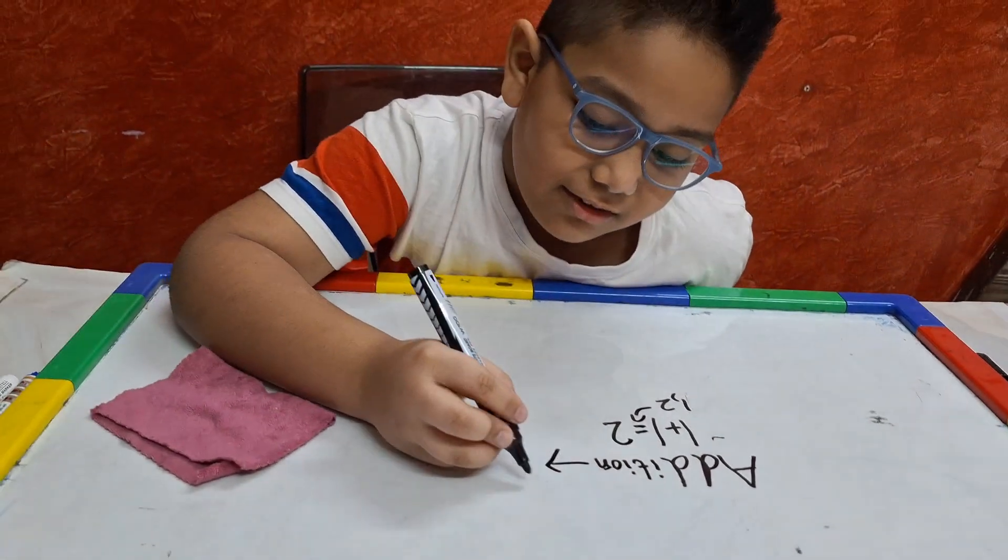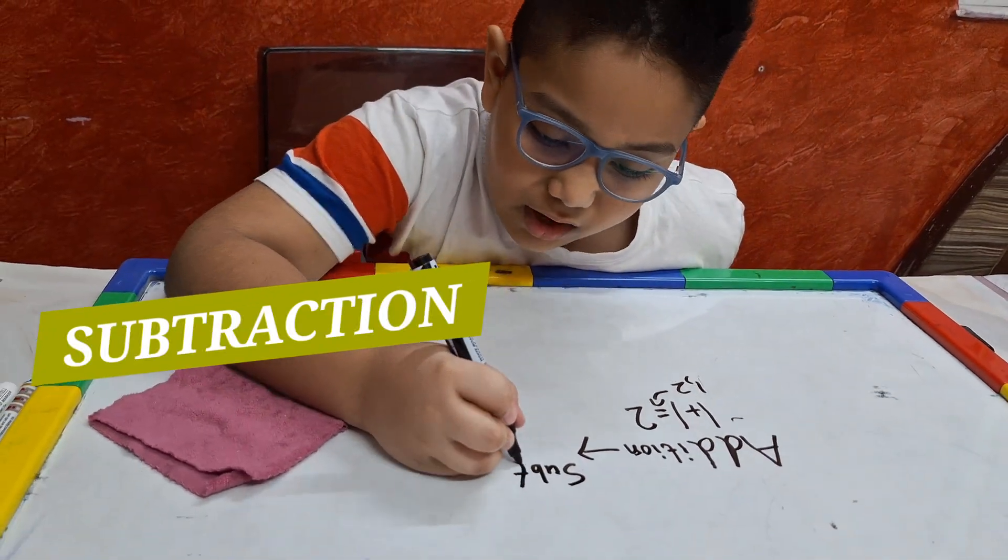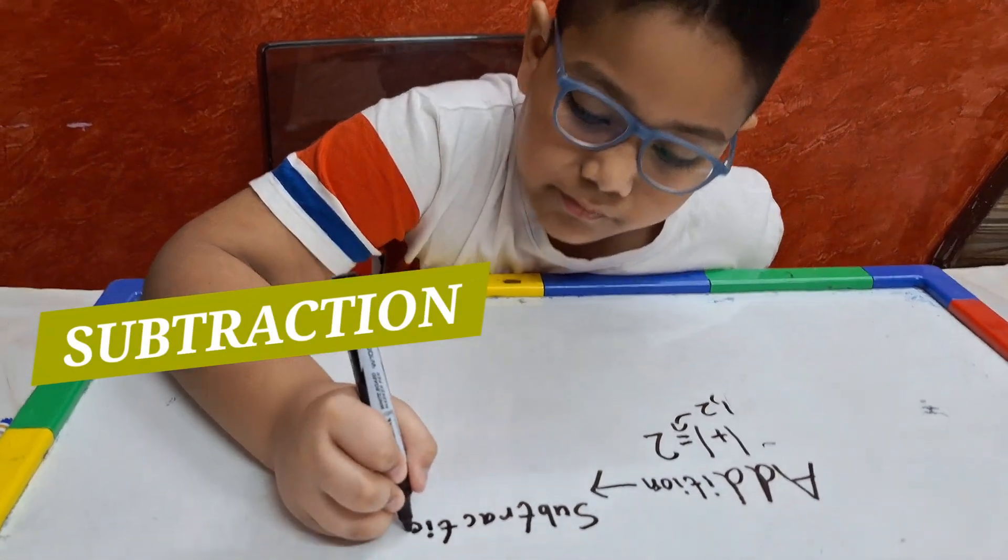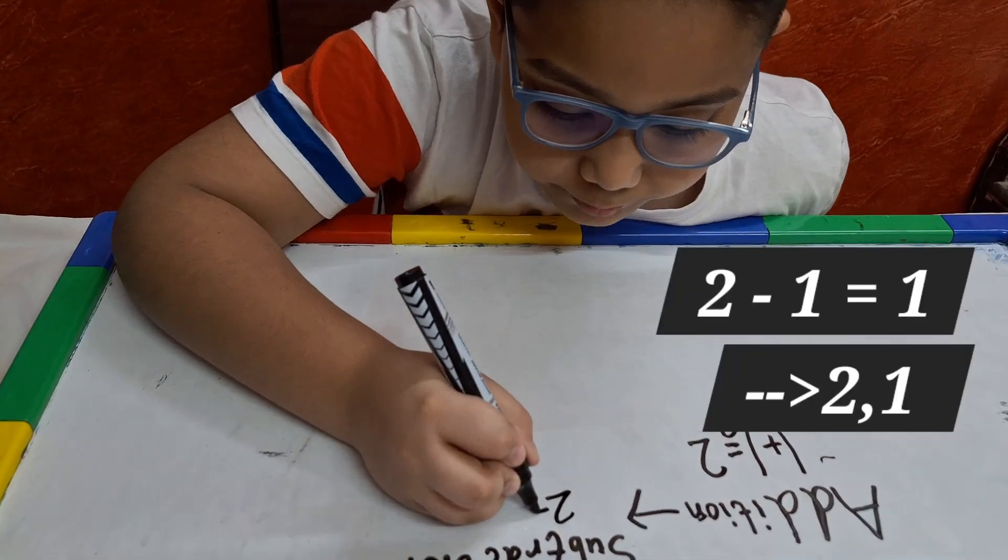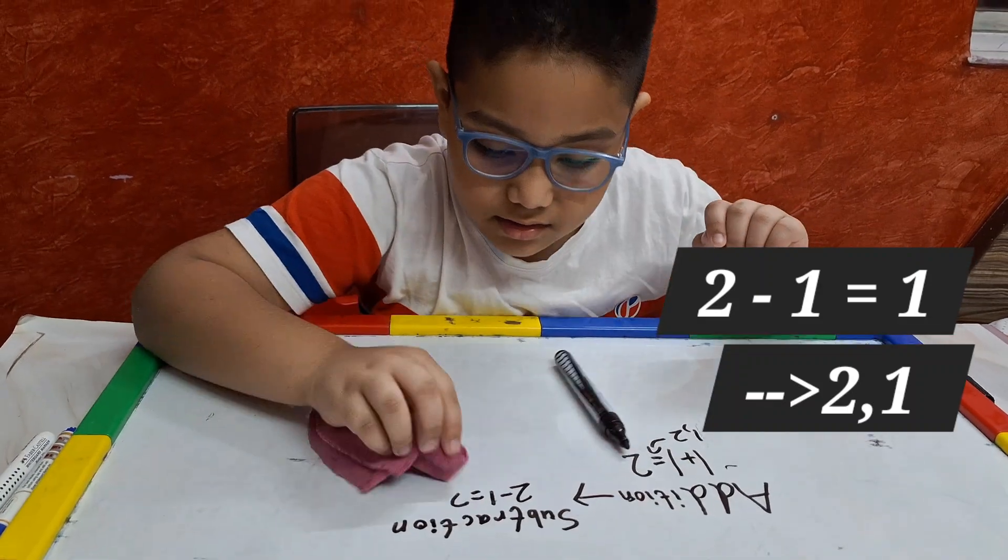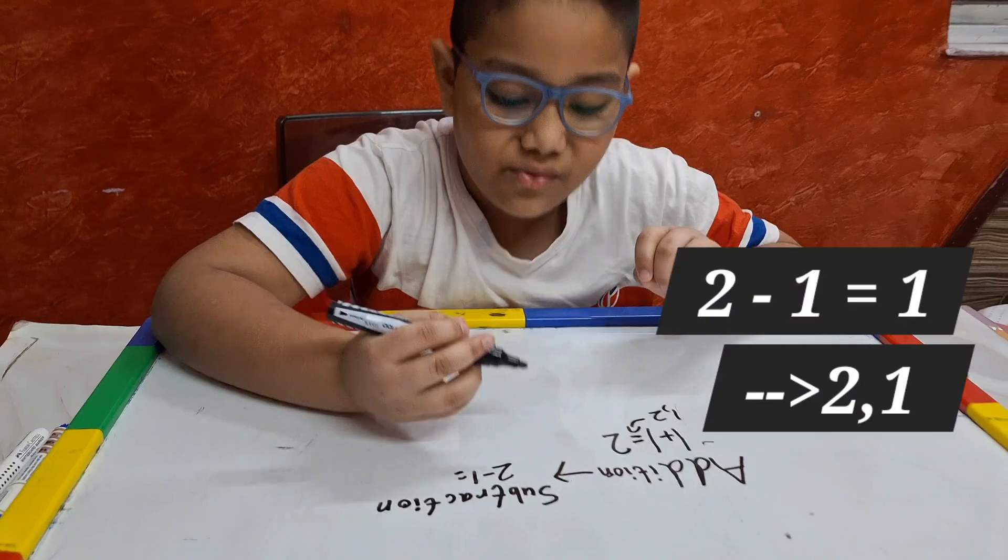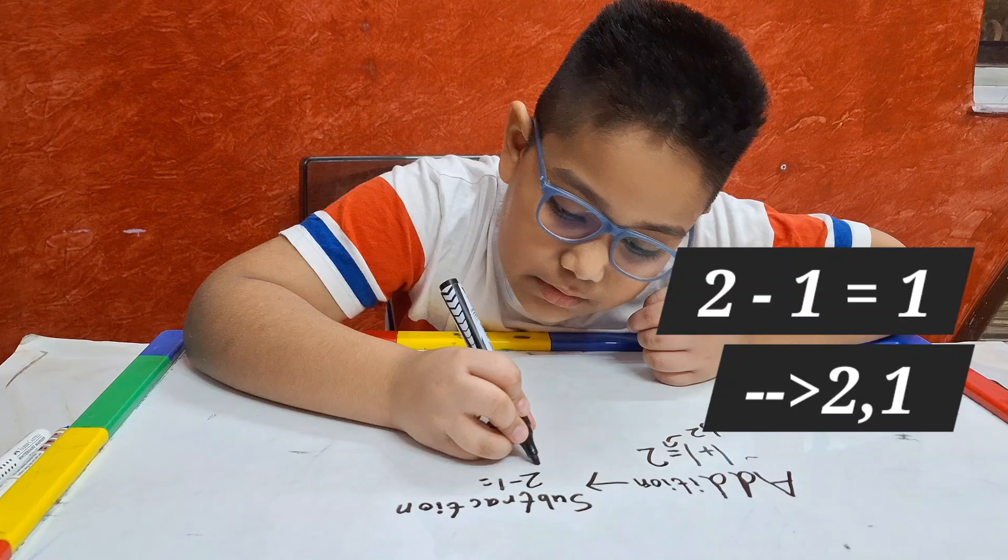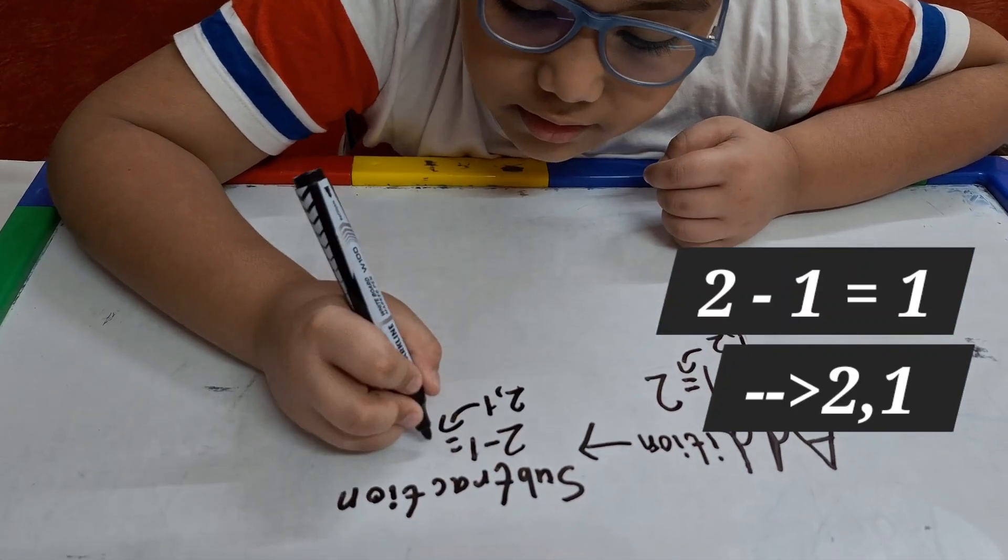Now let's move on to subtraction. Come on, come on. Two minus one. Wait. Okay. Think of this solution. It's simple. Just count backwards one more. Two, one. The answer is one.